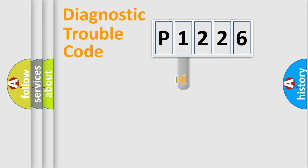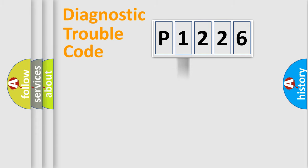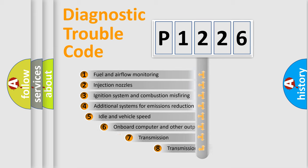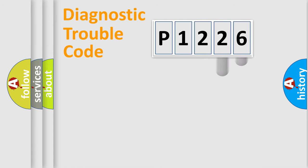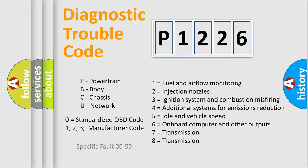This distribution is defined in the first character of the code. If the second character is expressed as zero, it is a standardized error. In the case of numbers 1, 2, or 3, it is a manufacturer-specific error. The third character specifies a subset of errors. This distribution is valid only for the standardized DTC code, and only the last two characters define the specific fault of the group. This division is valid only if the second character is expressed by the number zero.